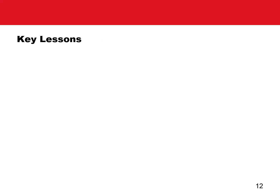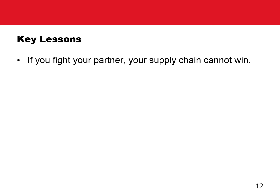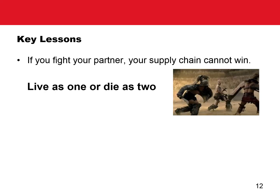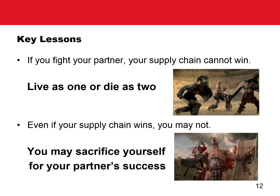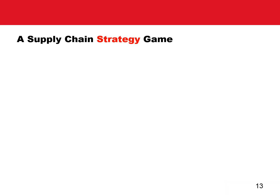Using my favorite show, Spartacus, I'd like to summarize the two key lessons that students can learn from this game. First, if you fight your trading partner, your supply chain cannot win — both partners will lose — that is, live as one or die as two. And second, even if your supply chain wins, you may not. You could sacrifice yourself for your partner's success.